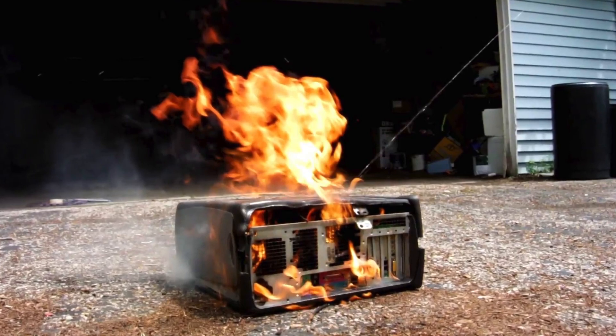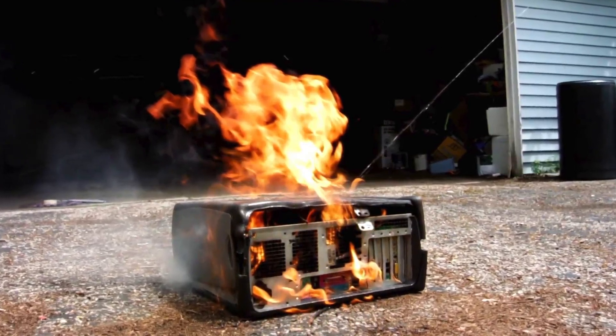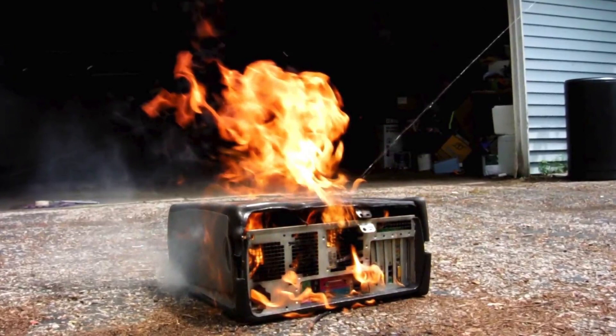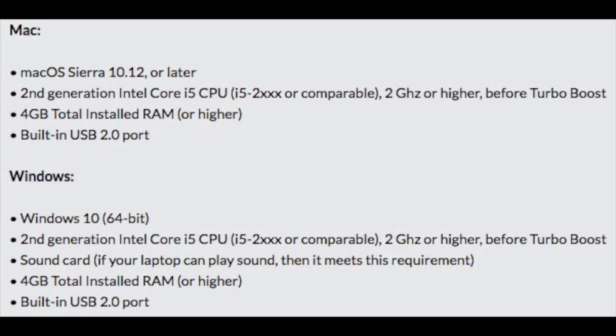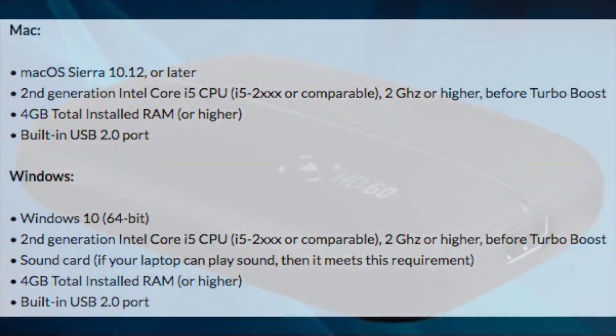I then went to the Elgato website to check out the technical specifications for computers working with the Elgato HD60. You can see the results on screen here — the specs for Mac at the top and Windows at the bottom — and both require an Intel Core i5 CPU. When I checked my own Macintosh to see what CPU I was running, I was quite embarrassed: it's very underpowered, in fact perhaps three or four generations behind what was needed. The issue being that the CPU simply wasn't powerful enough to deal with all the information I was feeding it.